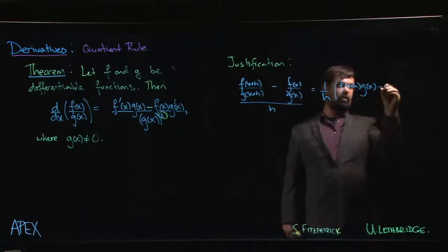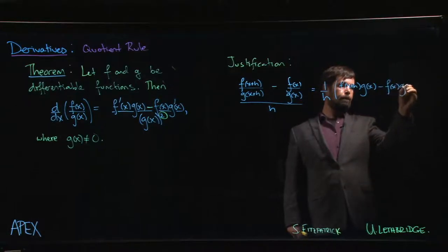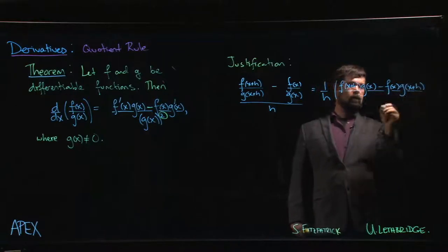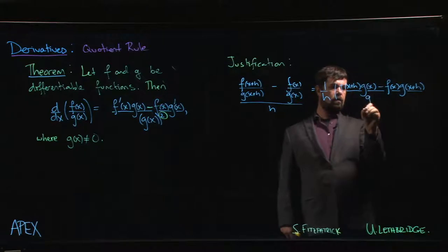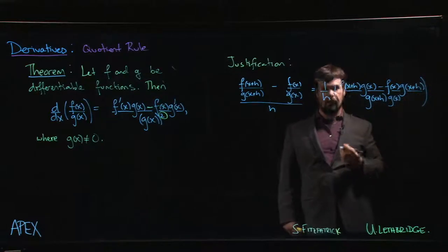bottom by g of x plus h. So we're going to have f of x times g of x plus h over g of x plus h times g of x.